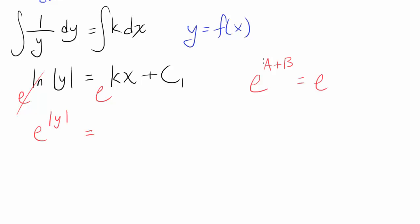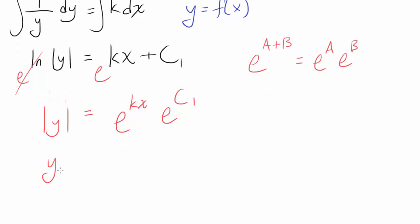You know, let's say e^(a+b), that's the same thing as e^a times e^b. This is from algebra, properties of exponents. So let's break this apart. This is the same thing as e^(kx) times e^(C₁). And I made a mistake here. It should be just y, because e and natural log cancelled out. So you have |y| = e^(kx) times e^(C₁).